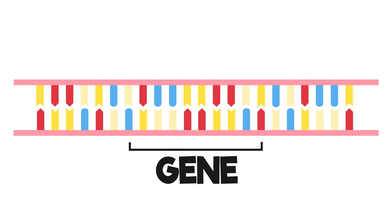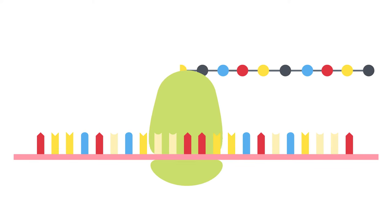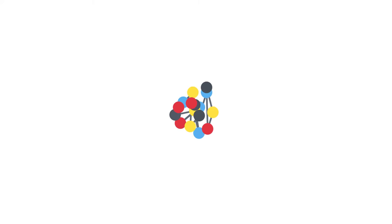If this change occurs in a gene, it can alter the order that amino acids are coded for, which in turn will change the shape of the protein. A change in a protein's shape can result in the protein acting differently or not working at all.